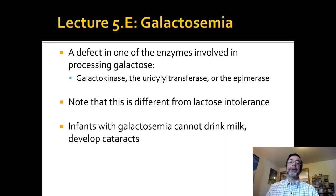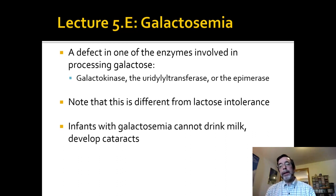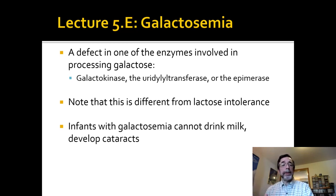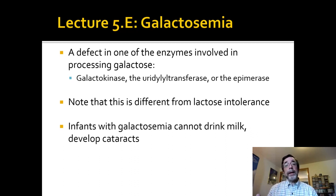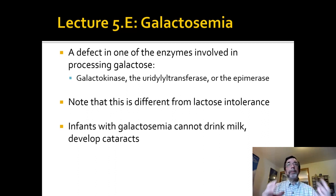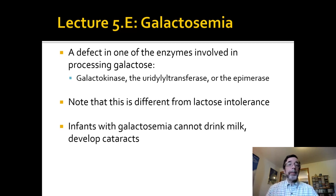Galactose intolerance is different from lactose intolerance because lactose is a disaccharide that includes galactose, so they overlap. If you have an infant with galactosemia, they cannot drink lactose because it includes galactose as one of the two subunits. They cannot drink milk, and in a particularly severe form it builds up and causes cataracts. That's one reason why we do newborn testing — if they're missing a metabolic enzyme, we can control it by controlling their diet and make sure we don't give them galactose.